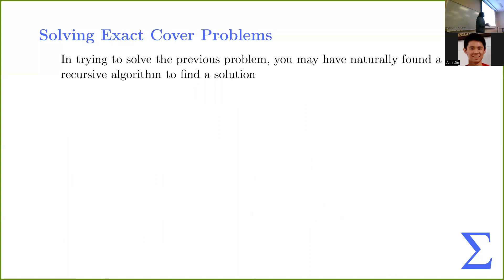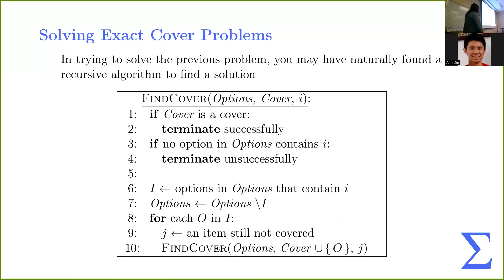So, in trying to solve the previous exact cover problem, you may have been running through a sort of recursive algorithm in your head quite naturally. So, here's a very simple algorithm to solve exact cover. So, if we're trying to cover item I, and we have our current options and our current cover. So, if our current cover is, in fact, an exact cover, we're going to terminate successfully. Otherwise, our goal is to cover item I right now. But if there's no options left to cover item I, well, then we can't do anything. So, we failed.